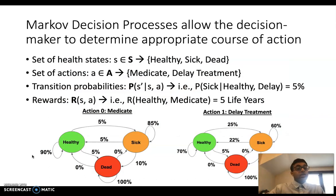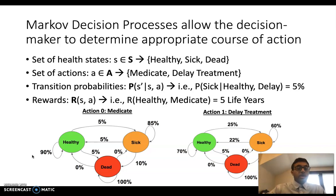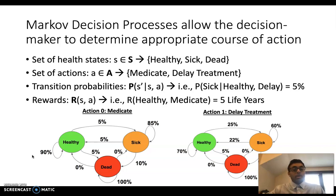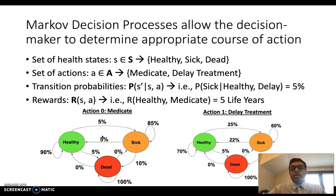There's this idea of a Markov decision process that allows the decision maker to determine the appropriate course of action through various algorithms. Our Markov decision process is formulated using states, actions, transition probabilities, and rewards. The set of health states in this toy example has three states: healthy, sick, and dead. There are two actions the physician can take — either to medicate the patient or to delay treatment. The transition probability is the probability that given a person's current health state and an action, they transition to a different state. In this model, the probability that a healthy patient who delays medication becomes sick is five percent. Rewards in the medical case are the amount of quality adjusted life years you gain from taking a given action in a given state.